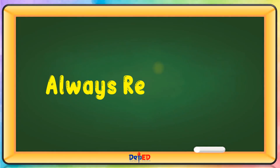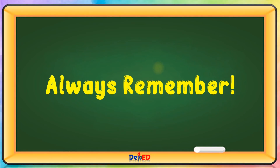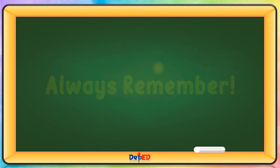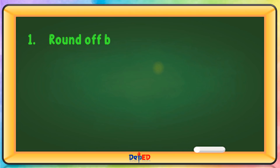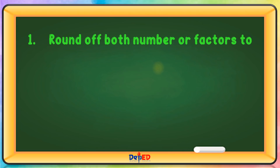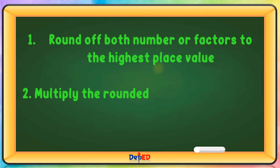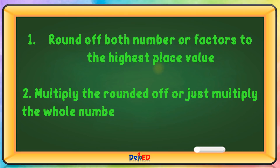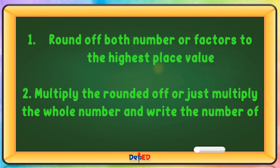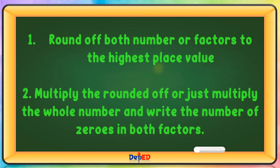Always remember: round off both numbers or factors to the highest place value, then multiply the rounded-off whole numbers and write the number of zeros from both factors.